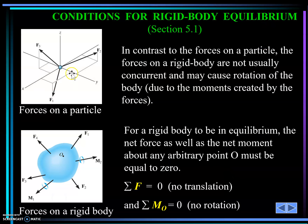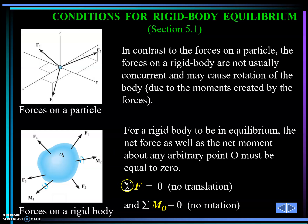We studied equilibrium for a particle, and now we are studying equilibrium for a rigid body. The difference is: for a particle, we have sum of forces equals zero and they meet at a certain point. For a rigid body, the forces do not have to be concurrent — they create a moment as well. So we have two equations of equilibrium: sum of forces equals zero, and sum of moments equals zero. For a particle, it was only sum of forces equals zero.